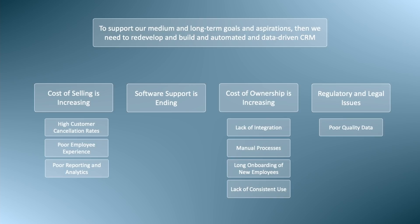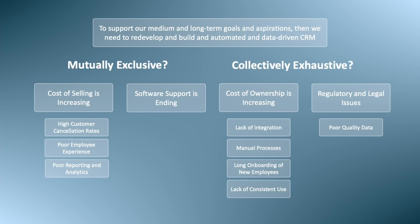Third, we tested if the groups were mutually exclusive. Increasing cost of selling is about profit, whereas cost of ownership is about cost — profit and cost are mutually exclusive. Software support is unrelated to profit and cost, and hence also mutually exclusive. Regulatory and legal issues could potentially be related to ending software support, but in our case they were related to poor quality data. So for us, the four groups are mutually exclusive. Fourthly, we tested if the groups were collectively exhaustive — there were no missing groups or premises, making it collectively exhaustive. Hence, we came to the conclusion that the groups or premises were MECE.